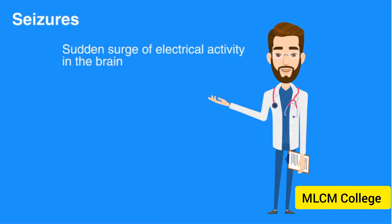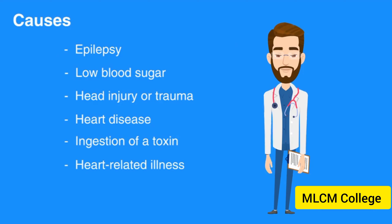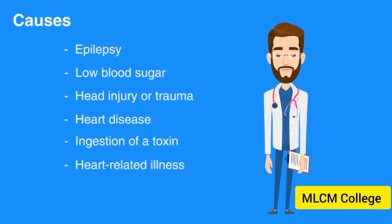A seizure is a sudden surge of electrical activity in the brain. Seizure-like activity is caused by epilepsy, low blood sugar, head injury or trauma, heart disease, ingestion of a toxin, or heat-related illness.